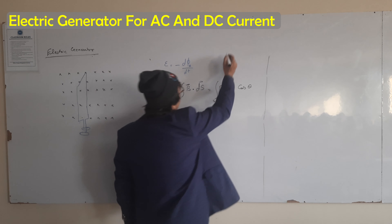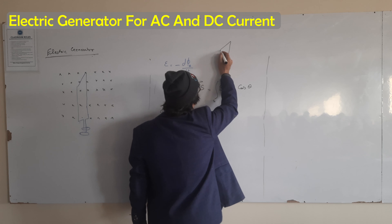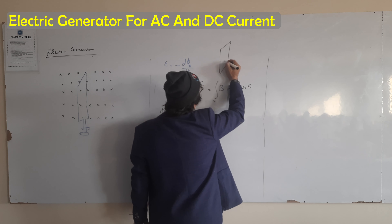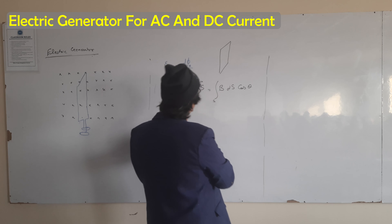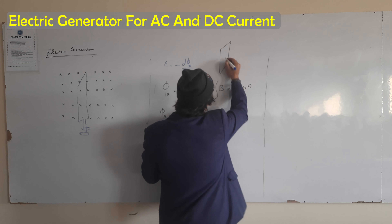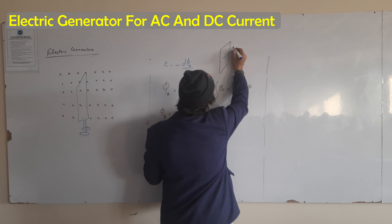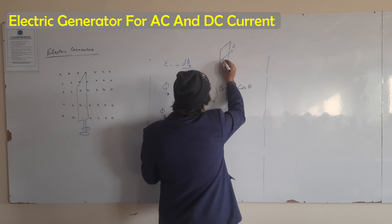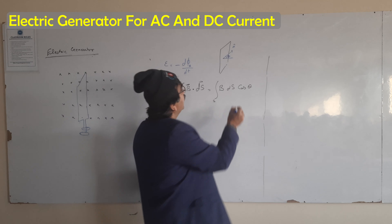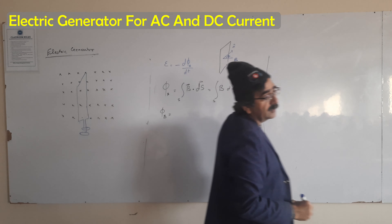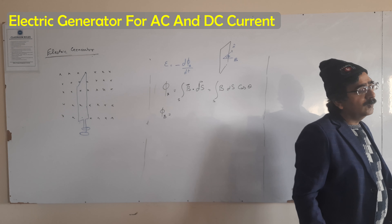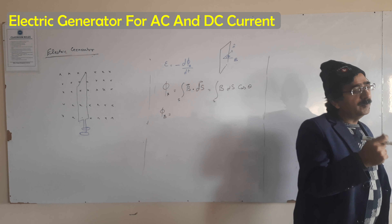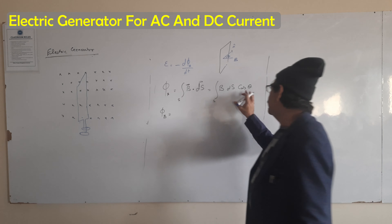If you have the surface and its normal making angle theta with the magnetic field, this angle theta will be changing with the passage of time.